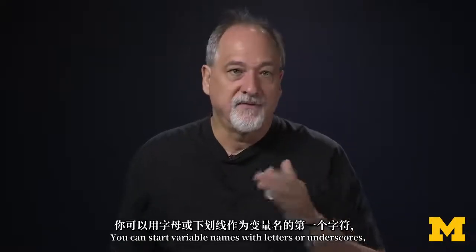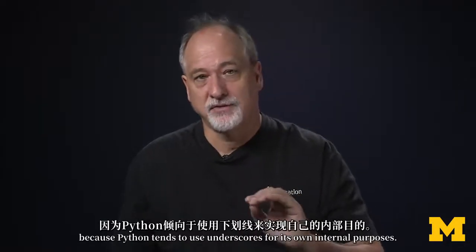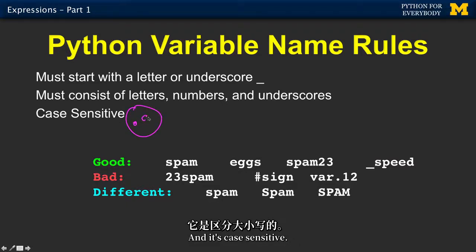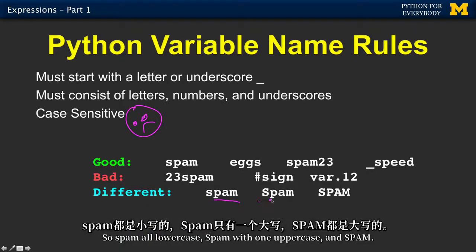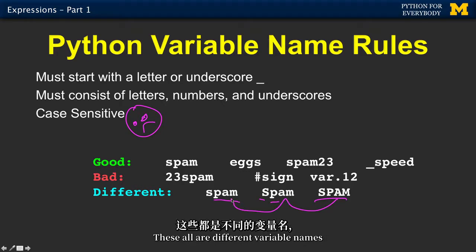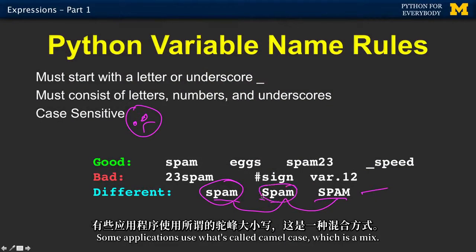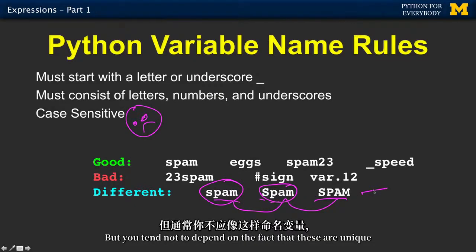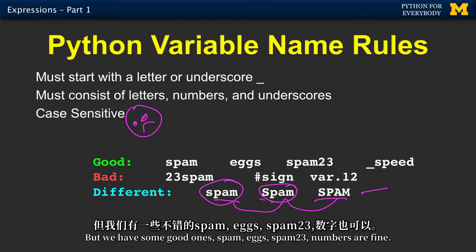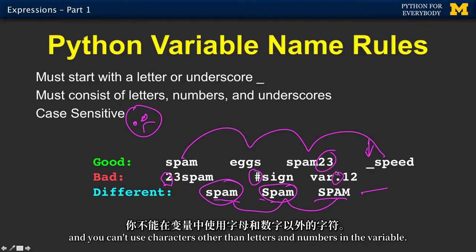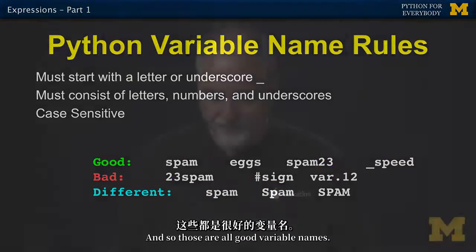You have some naming rules. You can start variable names with letters or underscores, although we avoid underscores because Python tends to use them for its own internal purposes. The rest can be letters, numbers, and underscores. It's case sensitive, but don't depend on that — spam all lowercase, spam with one uppercase, and SPAM are all different variable names, but that's not being clever. We tend to use mostly lowercase. Some applications use camelCase, but you should not rely on subtle case differences to distinguish variables, as it misleads readers.